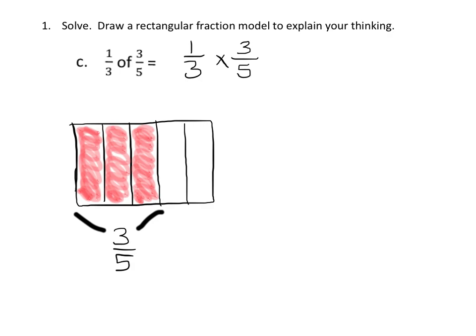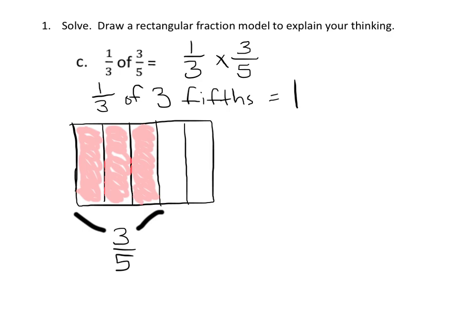Now it says 1/3 of 3/5. A couple of ways to think about this problem — I'll show you both. Using logic: 1/3 of 3 is 1, so 1/3 of 3 fifths is 1/5. We can immediately see that the answer is 1/5. 1/3 of 3/5 is 1 out of 3 of those fifths, so the answer is 1/5.